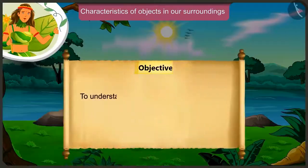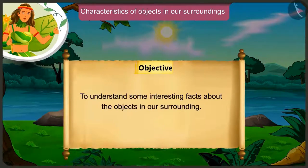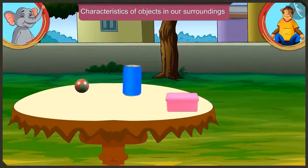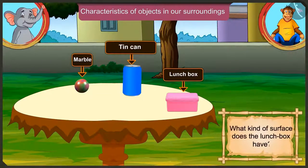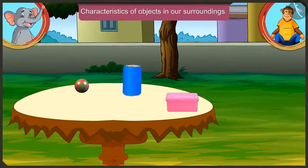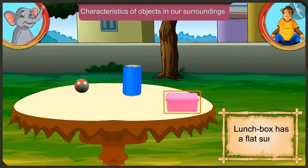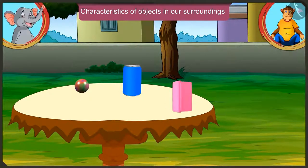Friends, today we will understand some interesting facts about the objects in our surroundings. Appu, look, a few things are kept over here: a marble, a lunch box and a tin can. Can you tell me what kind of surface does the lunch box have? Yes, this lunch box has a flat surface, which we can also move by putting it upright.